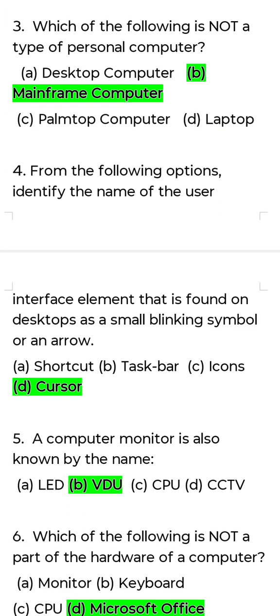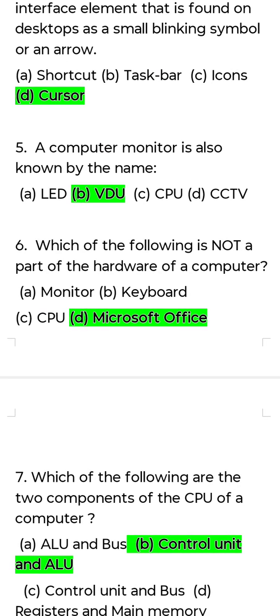Fourth question: Identify the name of the user interface element found on a simple desktop as a simple blinking symbol or an arrow. Answer: Cursor — a blinking symbol.